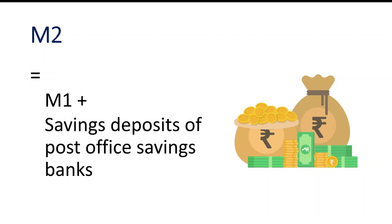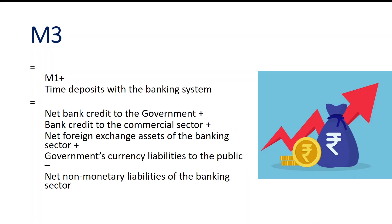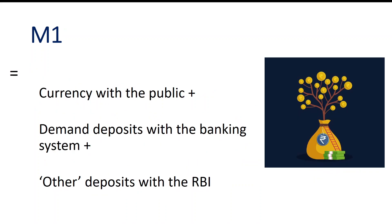Here in M2 we are adding post office saving banks. Then we have M3. M3 includes M1 plus time deposits with the banking system, which means we are adding both saving account deposits and also fixed deposits. Time deposit means fixed deposit.